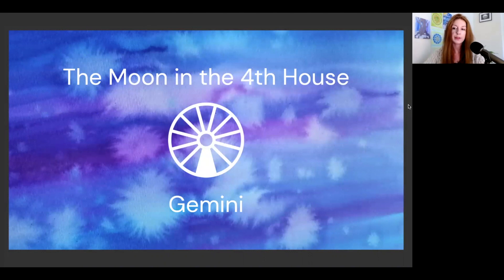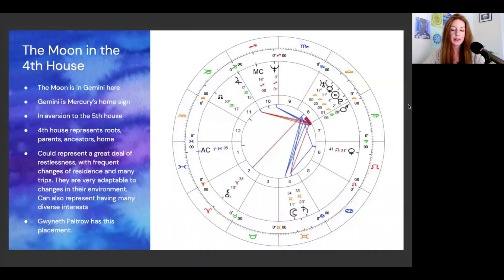The moon in the fourth house in Gemini. The moon here is in Mercury's temple and is in aversion to the fifth house, meaning it can't see by line of sight the fifth house, which is next door. It's just too close, which is not ideal. This means that the moon can't quite fully support what's happening in the fifth house of creativity here. The fourth house represents roots, parents, ancestors, homes, the base of the chart, the foundation place where everything comes from.